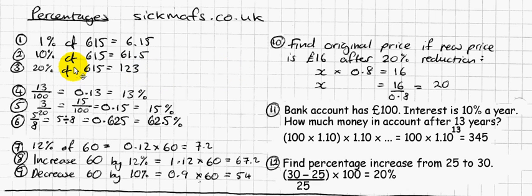Another good one to know is 5%, which you can easily work out from 10%, because 5% comes up in all sorts of useful percentage calculations. How do you work out 5%? You just work out 10% and then halve it to get 5%. Easy peasy.